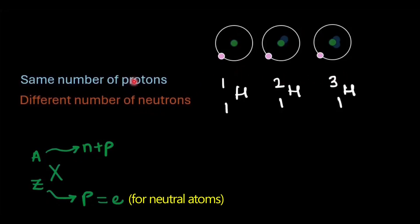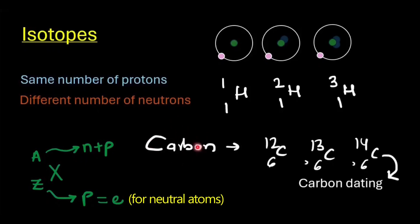These atoms are isotopes of one another. Another very common example of isotopes is that of carbon — carbon-12, carbon-13, and carbon-14. Carbon-14 is famously used for carbon dating, which is used to estimate the age of objects that are thousands of years old.